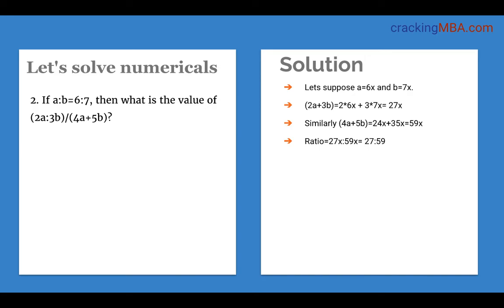Here we look at a more abstract example where we don't have direct numerical values. The ratio of a to b is 6 to 7. What is the value of (2a + 3b) divided by (4a + 5b)? Life becomes easy when we assume a equals 6X and b equals 7X. So 2a + 3b equals 27X, and 4a + 5b equals 59X. The ratio of both comes to 27 to 59.